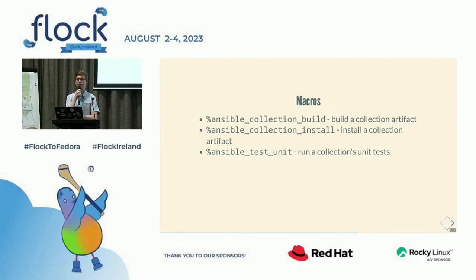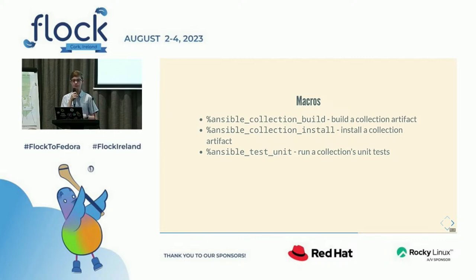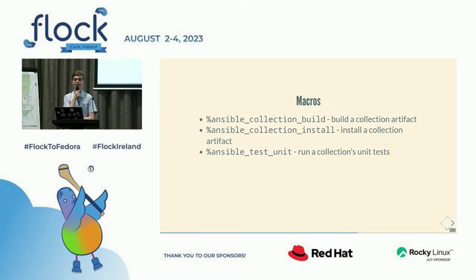We also have ansible_test_unit, which runs the ansible-test units command — this macro should have had an S at the end, my mistake. It's used for running the collection's unit tests. Ansible has three different types of tests orchestrated by the ansible-test command: unit tests, which we run within RPM builds; integration tests, where you write playbooks to run Ansible modules and check they work correctly; and ansible-test-sanity, which is basically linters.